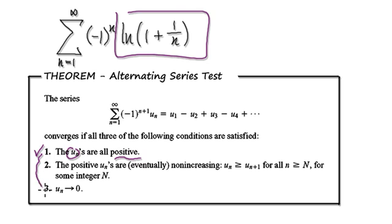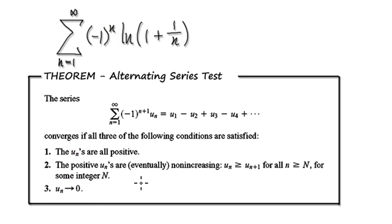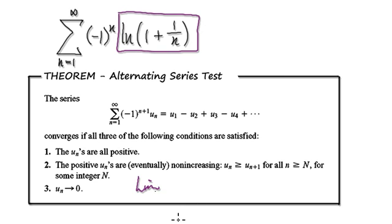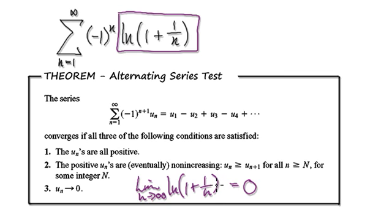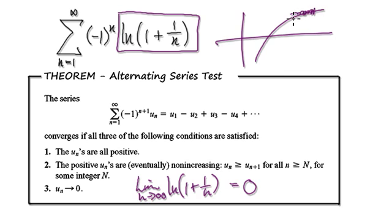So now check number three: make sure that the limit of u_n equals zero. So what this is saying is make sure that the limit of natural log of one plus one over n, as n tends to infinity, is heading towards zero. Make sure that the limit is zero. Well, you can see by looking at the graph that it is heading towards zero — you can just tell by looking at this. So number one has been met and number three has been met.